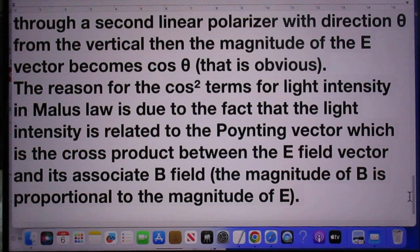Which is the cross product between the E field and its associated B field vector. And the magnitude of B is proportional to the magnitude of E. That's the reason why you get cosine squared.